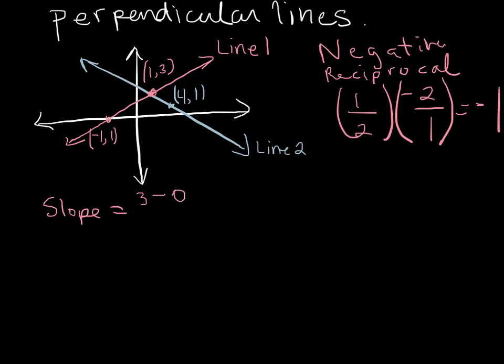Minus 0. I need to go back and just fix this point here. I put in a 1, this should be a 0. And then we've got 1 minus negative 1. So that gives me a slope of 3 over 2. And let's figure out the slope of the blue line.